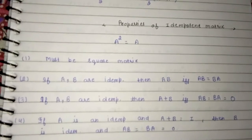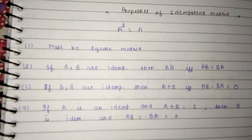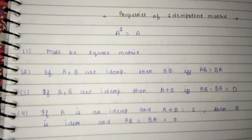There are some properties which are very important, so you can write them down also. First property: A must be a square matrix.